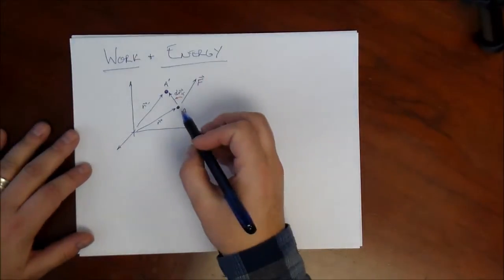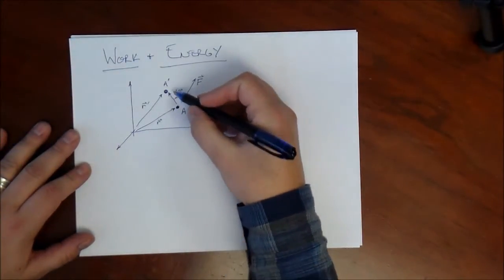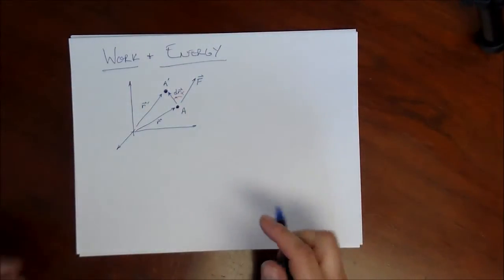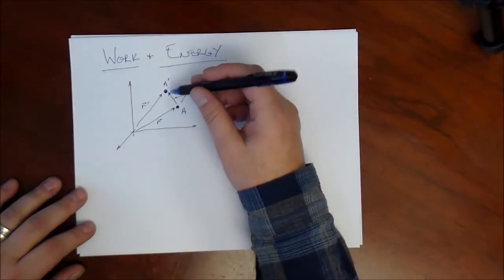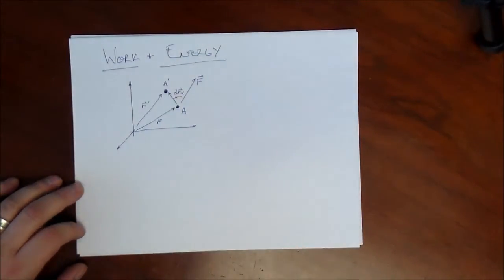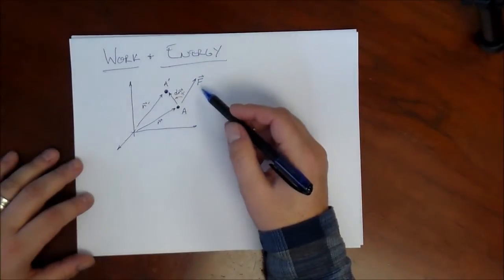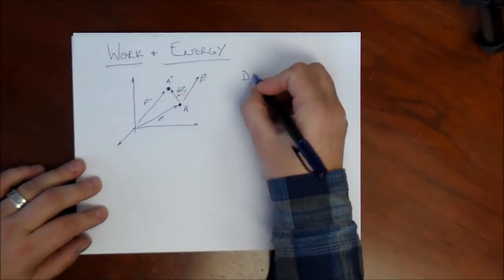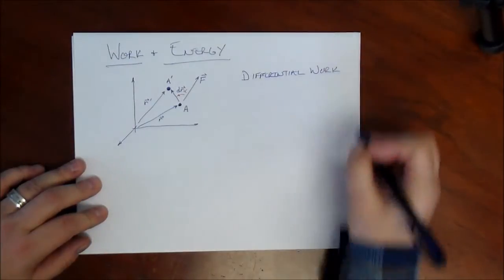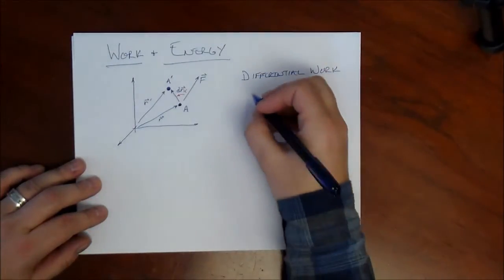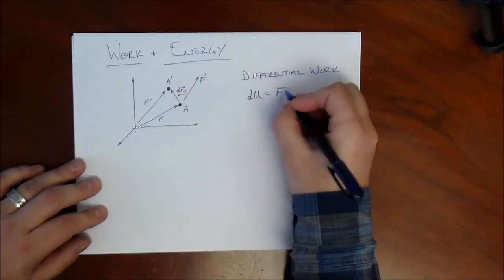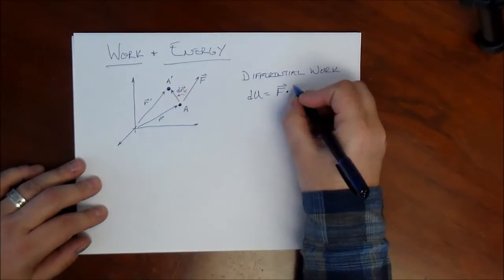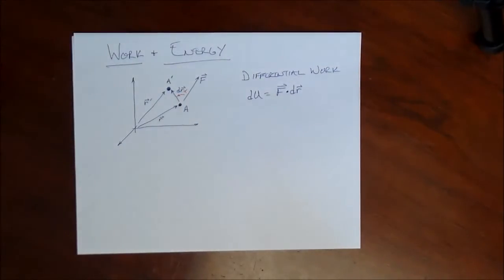Suppose we have a particle at point A, and it moves to some point A prime that's nearby. The displacement in going from A to A prime is dr. And during its motion, it's acted upon by this force F. We can define the differential work du as the force vector dotted with the differential displacement, F dot dr.